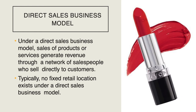One of the most common is the direct sales business model. Under this model, products or services generate revenue through a network of salespeople who serve directly to customers. There is no fixed retail location — only a headquarters if necessary. The HQ acts like a warehouse where supplies originate, superiors report, and operations are based, but there is no retail store where customers walk in to buy.